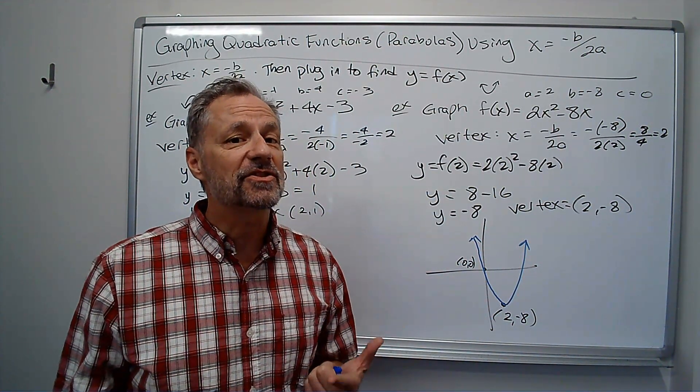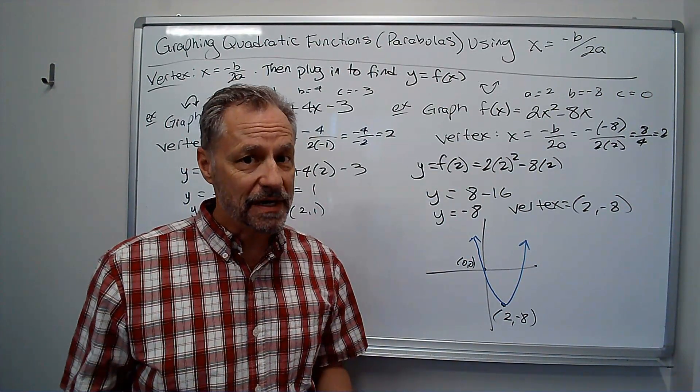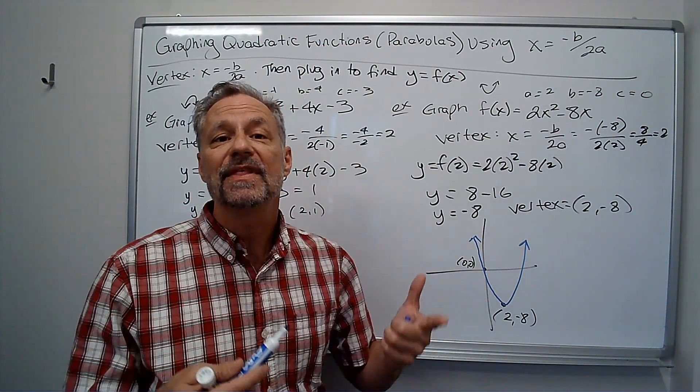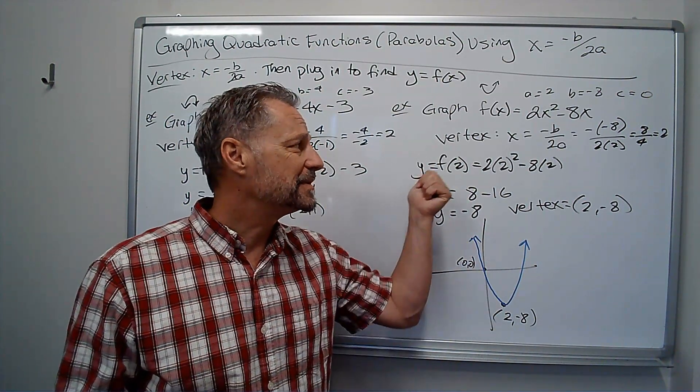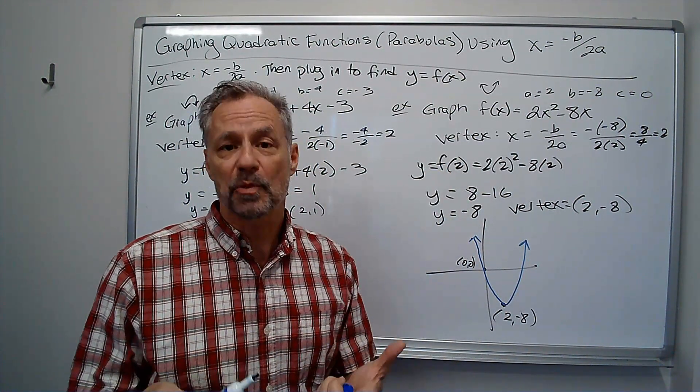I didn't have to complete the square. I don't want to complete the square. They get ugly sometimes when we have to complete the square. But the negative b over 2a is usually pretty nice.